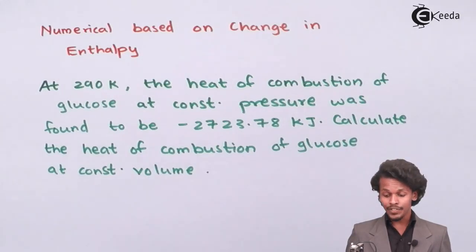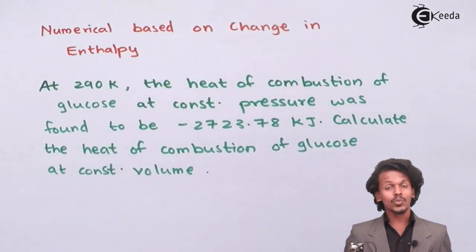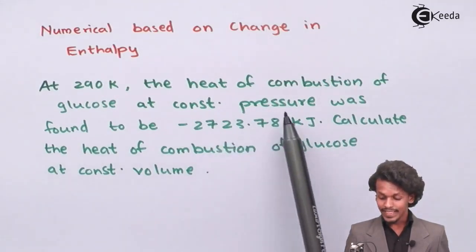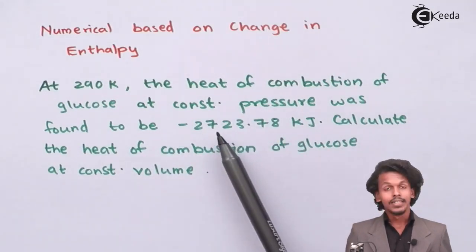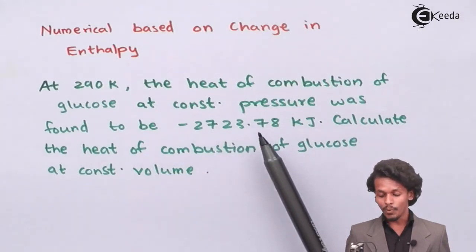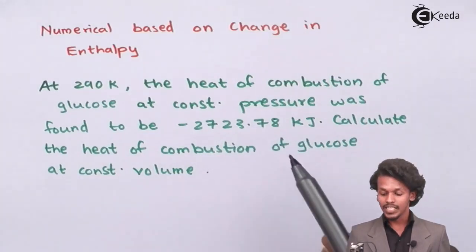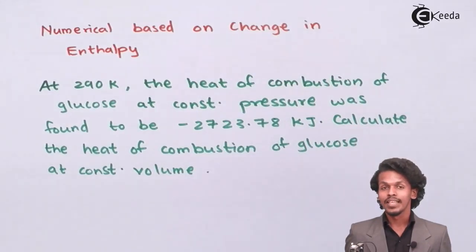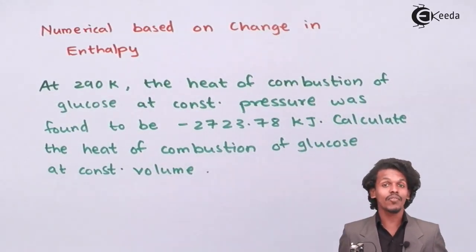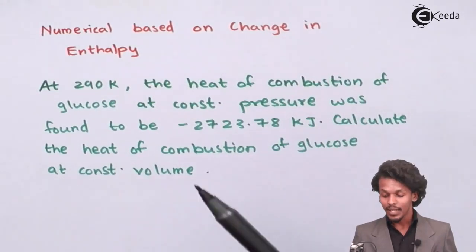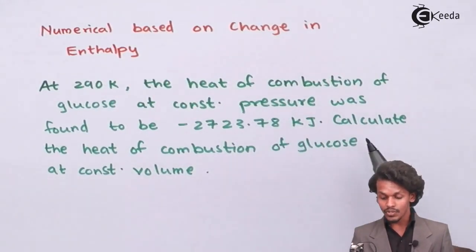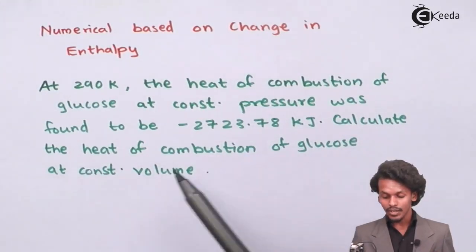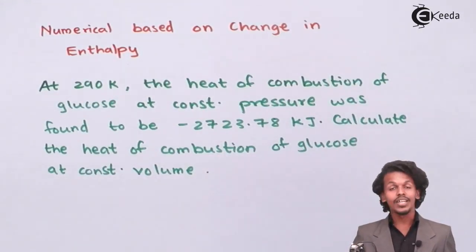In this case, the temperature is given as 290 Kelvin, and the value of minus 2723.78 kJ is the heat of combustion of glucose at constant pressure. We have to calculate the heat of combustion of glucose at constant volume.